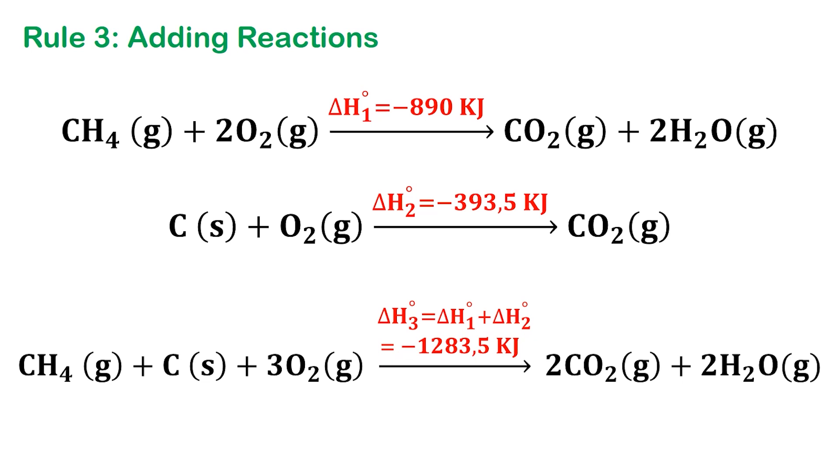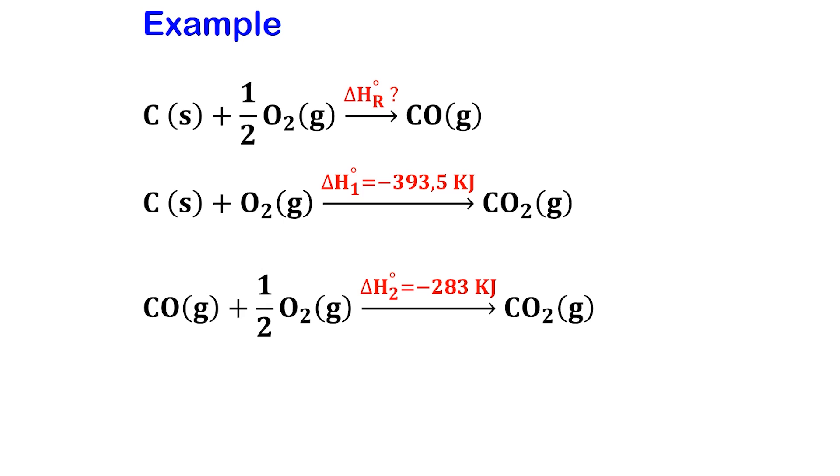Now that we've gone through the three rules - reversing, multiplying, and adding - the next step is understanding how to combine them to reach the equation we want. Think of it like assembling a puzzle. Rearrange, flip, or scale the given equations until they perfectly match your target reaction. And of course, whatever you do to the equations, you do to their delta H values as well.